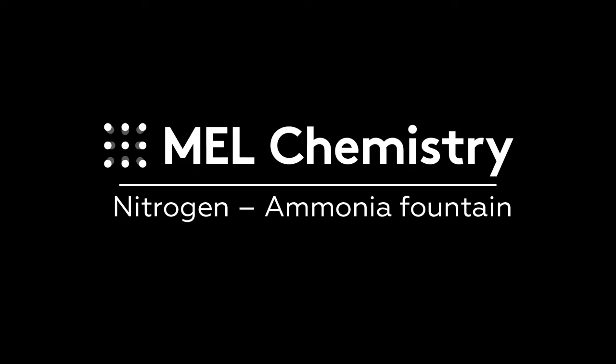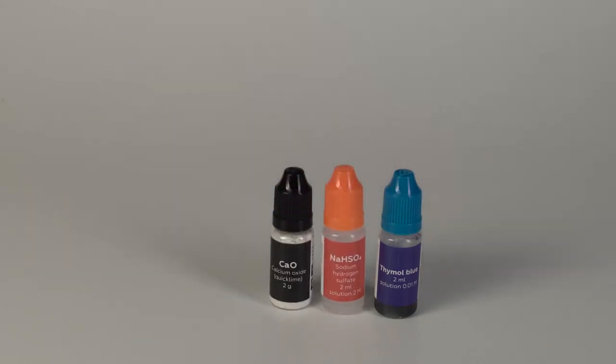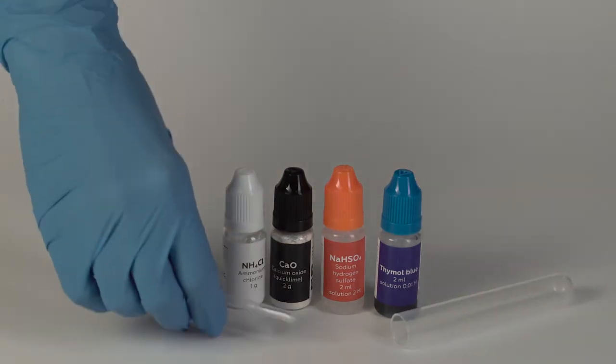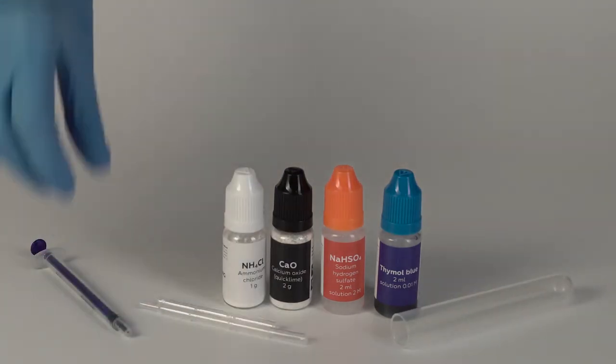For the ammonia fountain experiment, you will need the indicator thymol blue, the solution of sodium hydrogen sulfate, calcium oxide, ammonium chloride, a plastic bottle, two plastic tubes, and a one milliliter syringe without a needle.